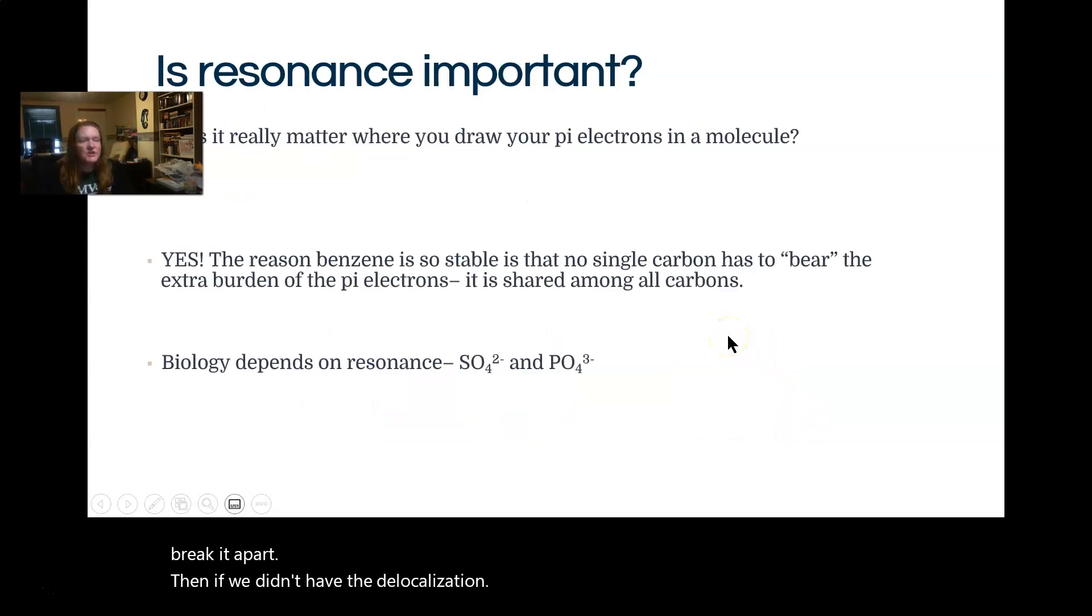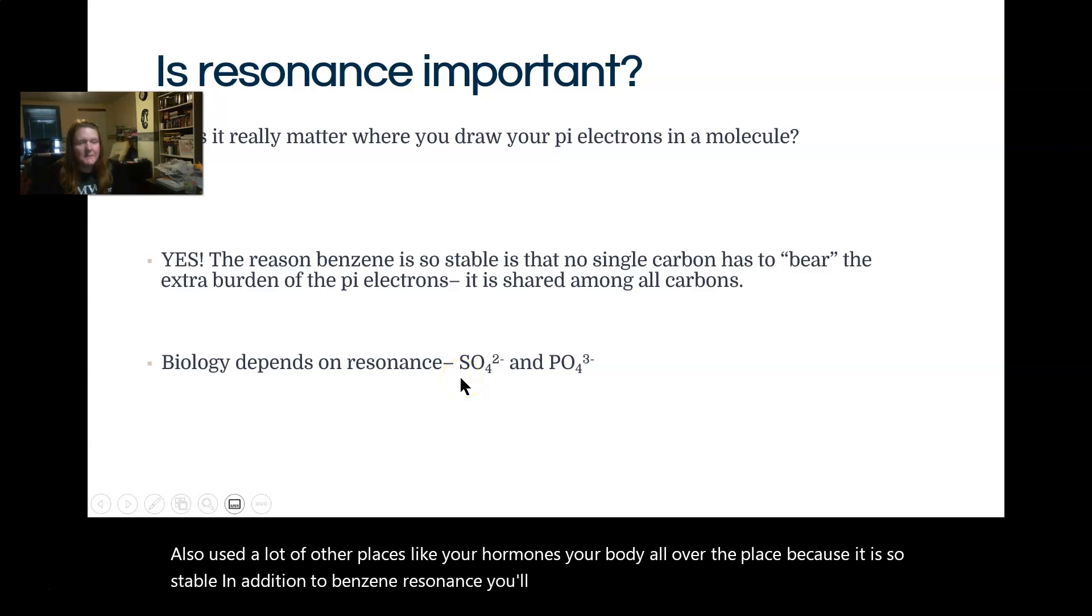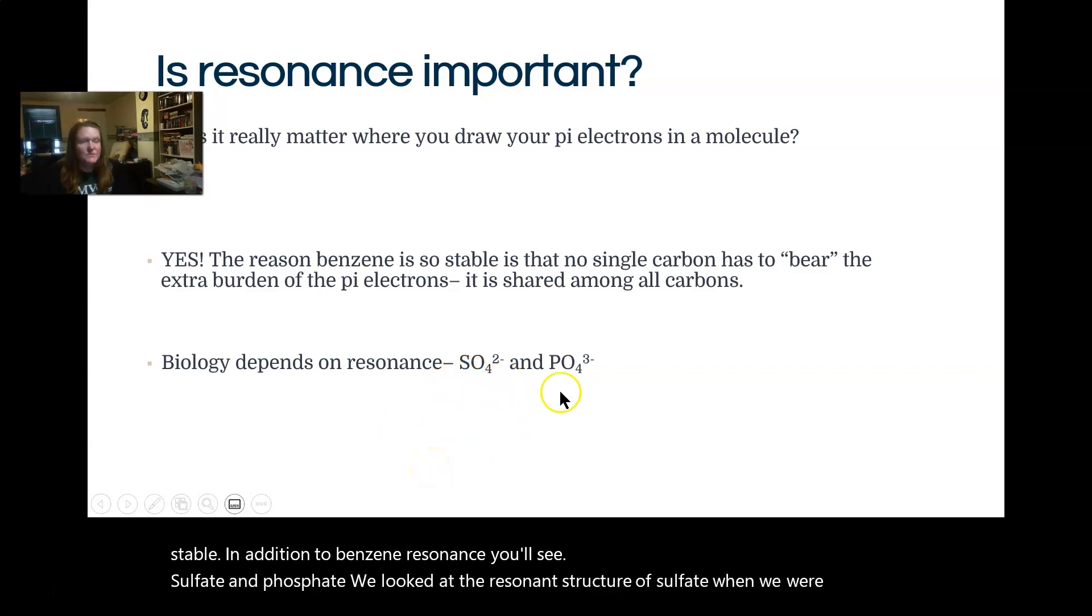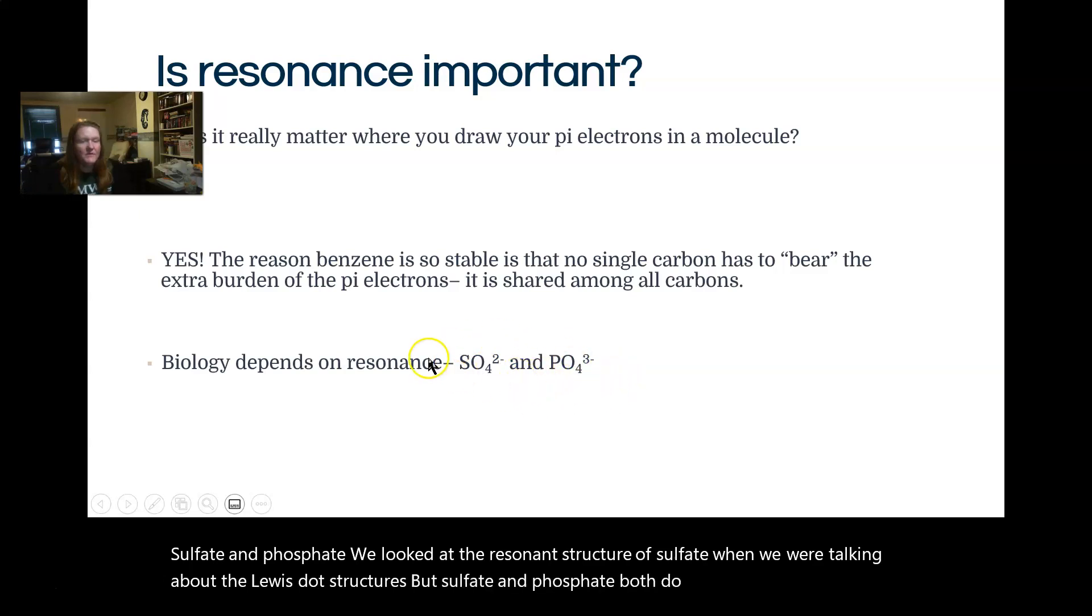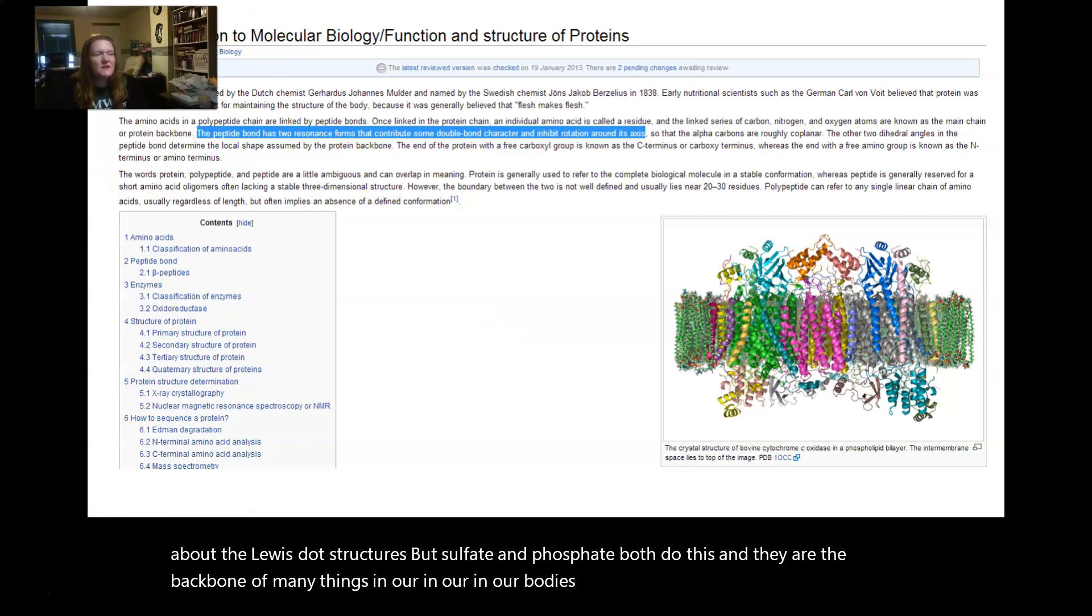So a lot of the time I get the question, is resonance actually important? And the answer is absolutely. Benzene is a fuel additive in some types of gasoline. It's also used a lot of other places like your hormones, your body, all over the place because it is so stable. In addition to benzene resonance, you'll see sulfate and phosphate. We looked at the resonance structure of sulfate when we were talking about the Lewis-Dot structures. But sulfate and phosphate both do this, and they are the backbone of many things in our bodies.